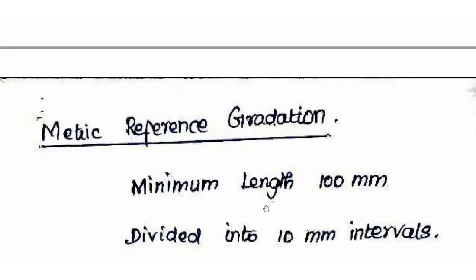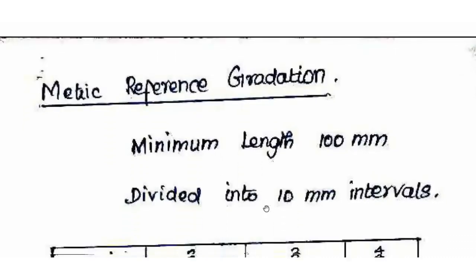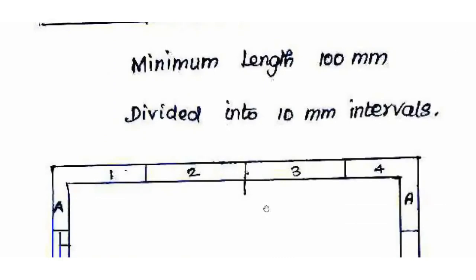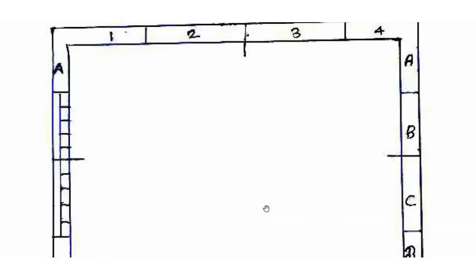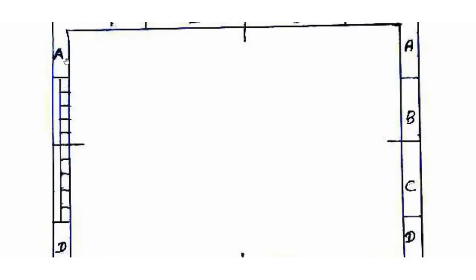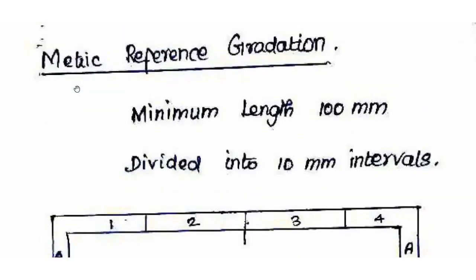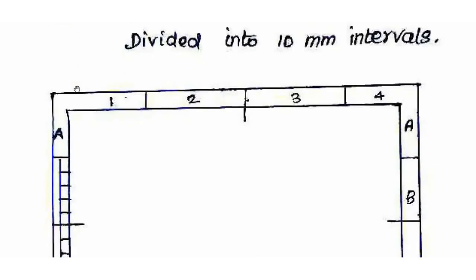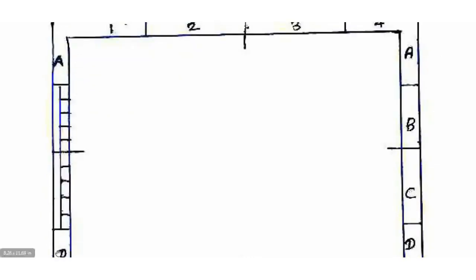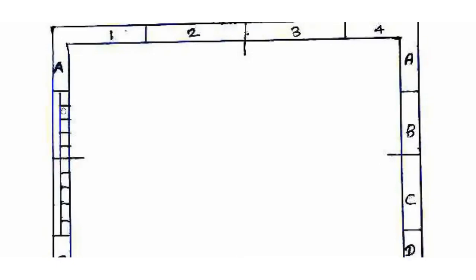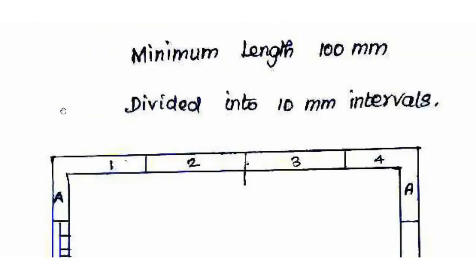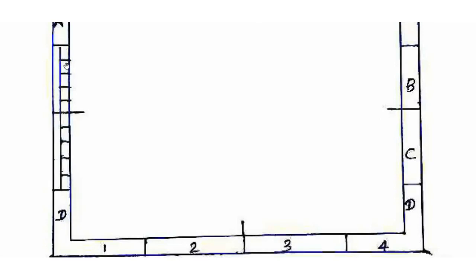Next is metric reference gradation. The minimum length of the metric reference gradation is 100 mm, divided into 10 mm intervals. The field length should not be less than 25 mm and should not be greater than 75 mm. This provides a scale reference on the drawing sheet.